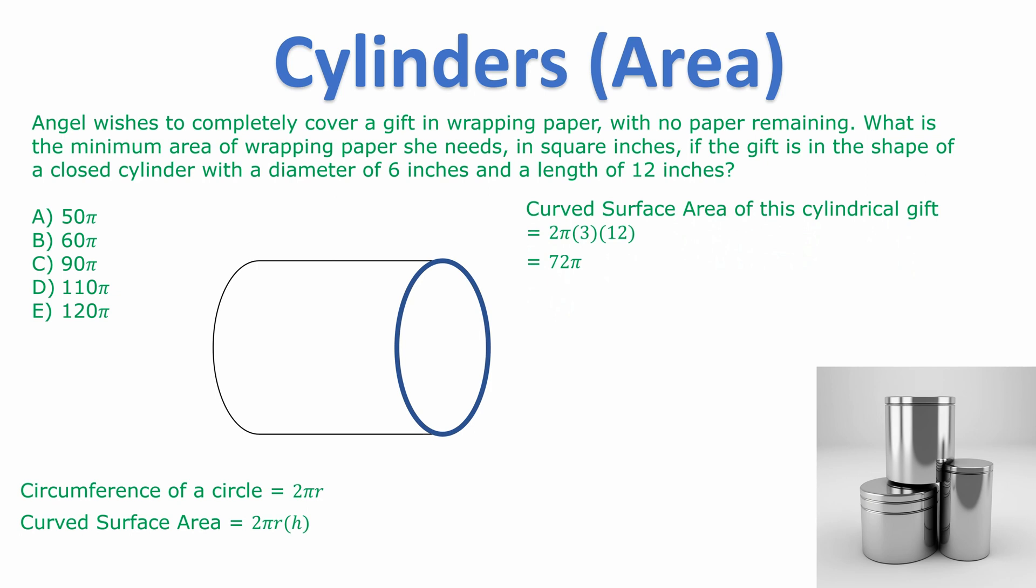It's a closed cylinder meaning it's going to have a base and a top. So I add on 2πr². This comes out as 18π. You don't square the π, just the 3. And we add these together to get the total surface area. 72π plus 18π is 90π which is answer C.